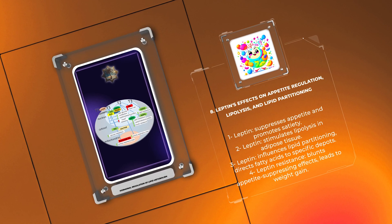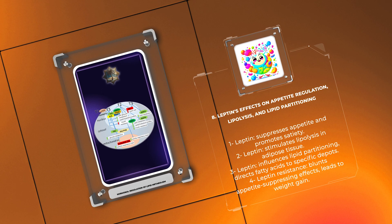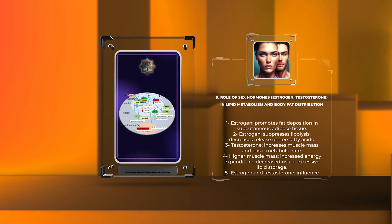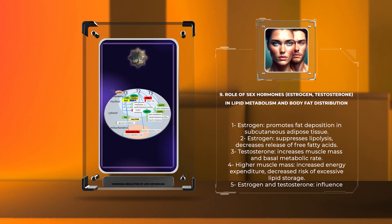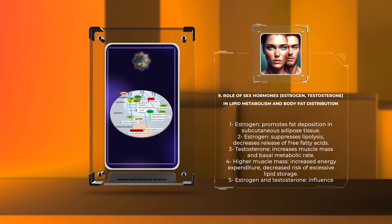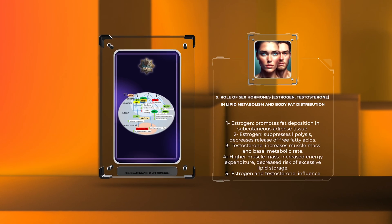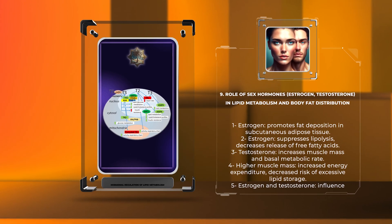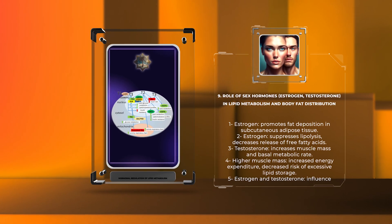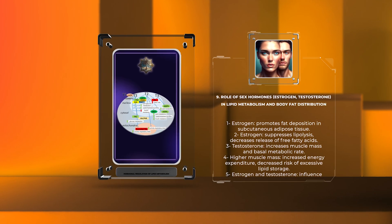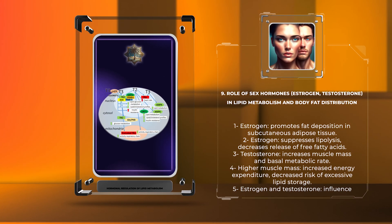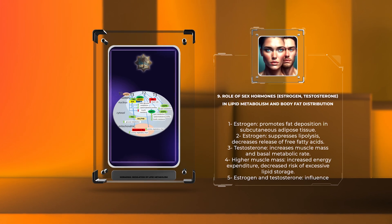Role of sex hormones, estrogen and testosterone, in lipid metabolism and body fat distribution. Now let's discuss the role of sex hormones, such as estrogen and testosterone, in lipid metabolism and body fat distribution. Estrogen, predominantly synthesized in the ovaries, plays a critical role in maintaining metabolic homeostasis in females. In females, estrogen promotes fat deposition in subcutaneous adipose tissue, protecting against visceral fat accumulation, which is associated with higher metabolic risks. Estrogen also suppresses lipolysis by inhibiting hormone-sensitive lipase, decreasing the release of free fatty acids into the bloodstream. Similarly, testosterone, primarily produced in the testes in males, influences lipid metabolism by increasing muscle mass and basal metabolic rate. This higher muscle mass contributes to increased energy expenditure, decreasing the risk of excessive lipid storage and metabolic disorders.